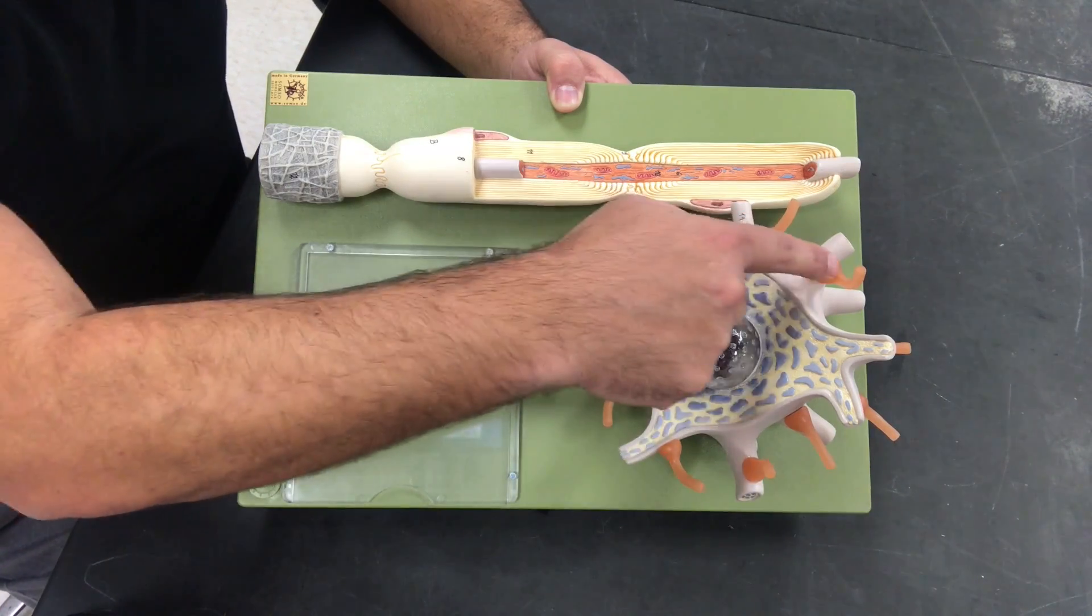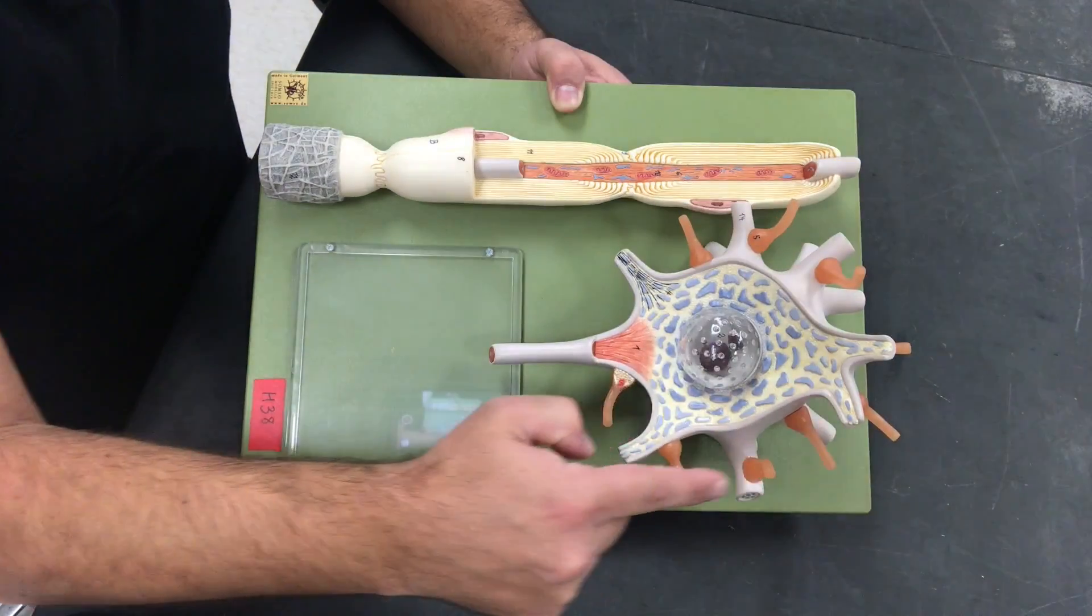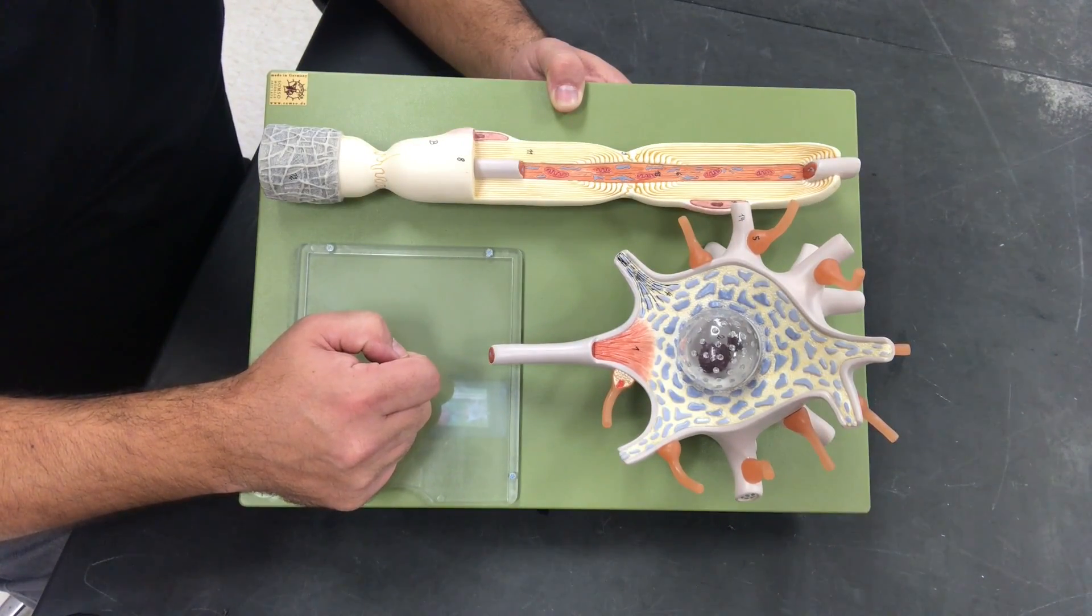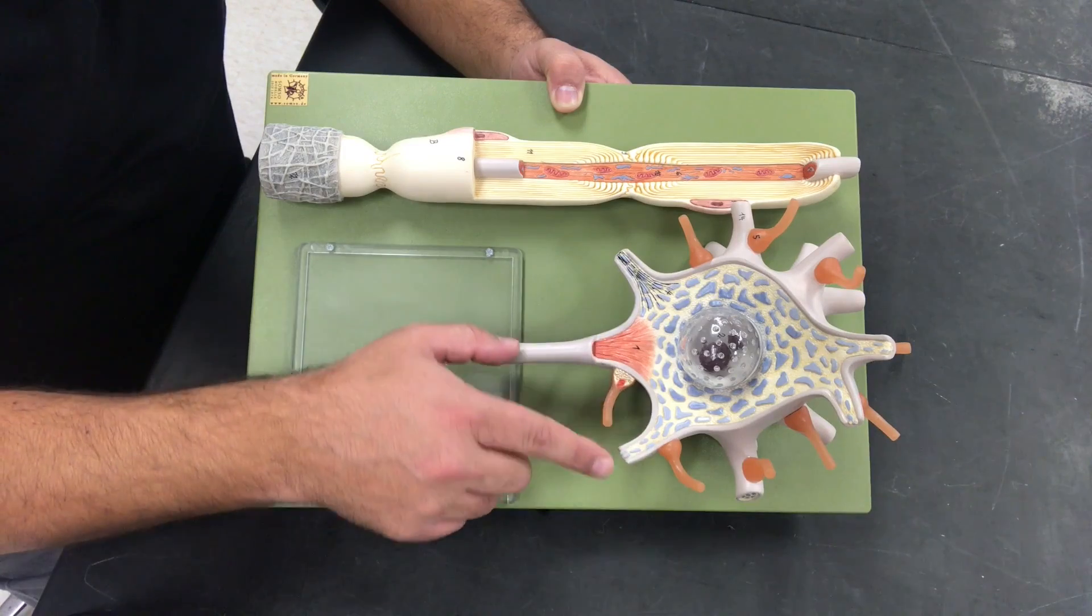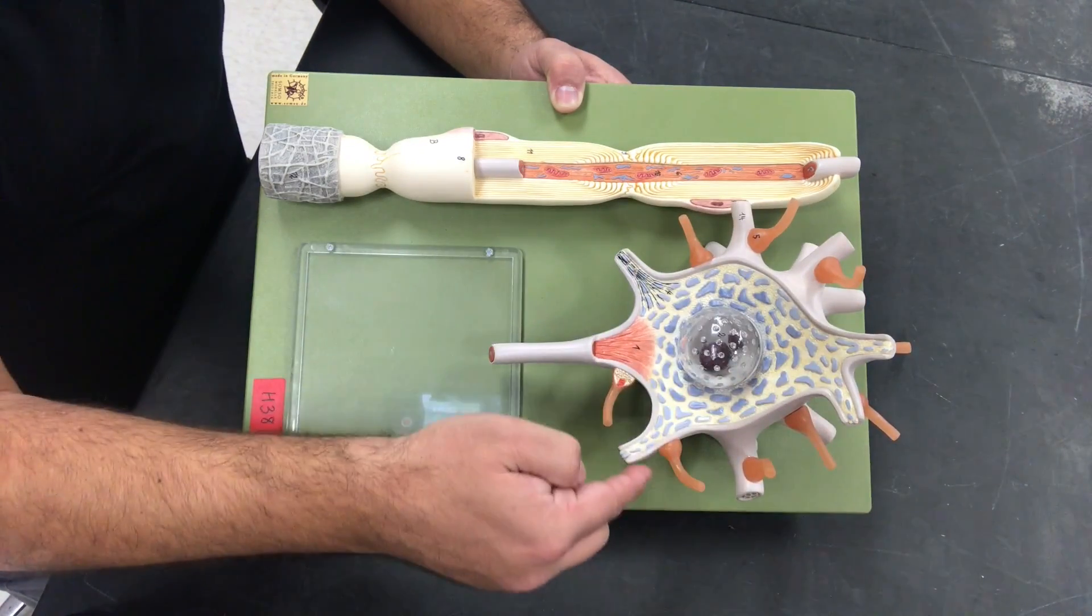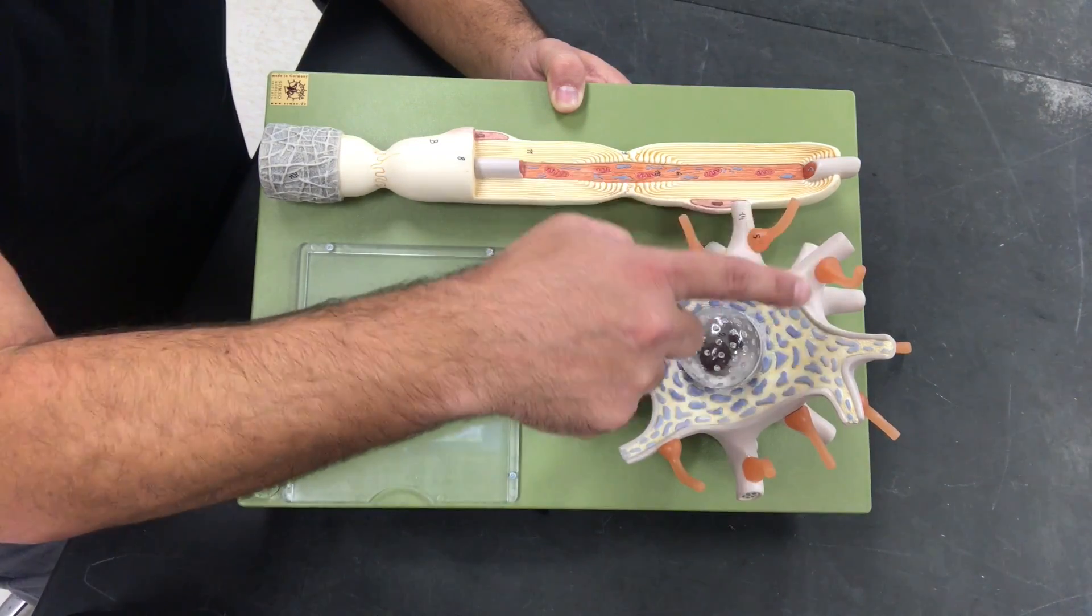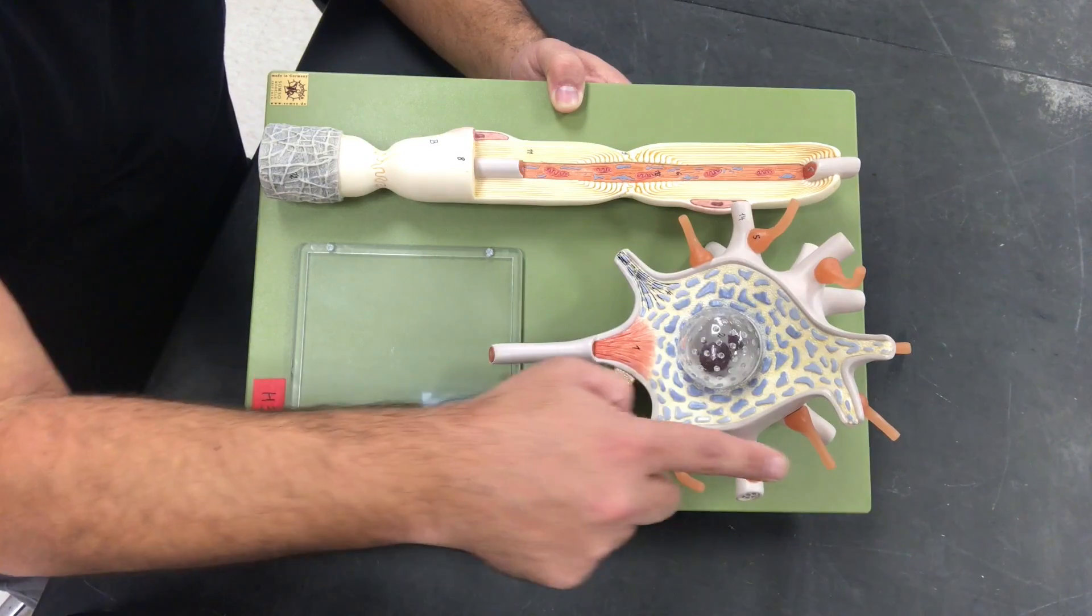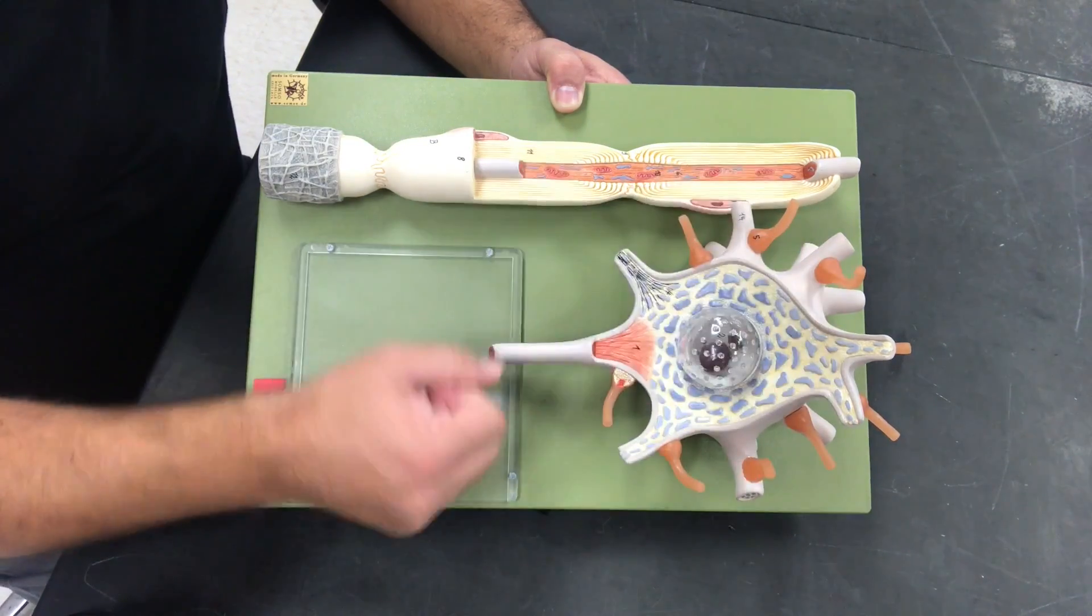I want to pay note to these orangey peach colored synaptic end bulbs that are coming into this neuron and a lot of people are confused here. They don't realize that at these dendrites, so these are our dendrites, that we can have other neurons and specifically their synaptic end bulbs coming in and communicating with this.